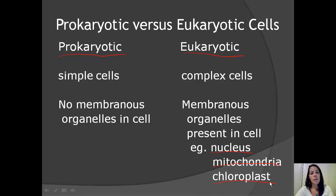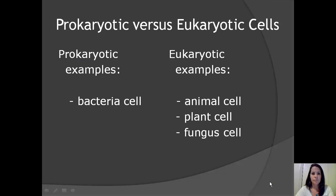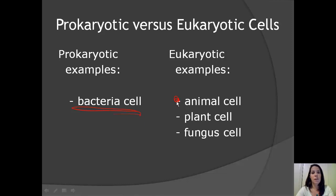When viewing eukaryotic cells under the microscope, the nucleus is one of the most visible things you will be able to see. Bacteria is an example of a prokaryotic cell. And some examples of eukaryotic cells are the animal cell — of course what we're made of — plant cells, as well as fungus cells.